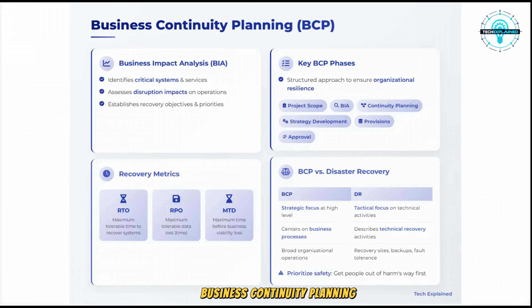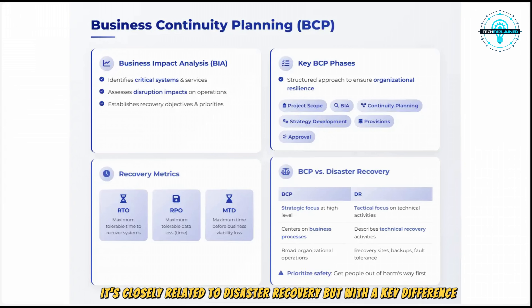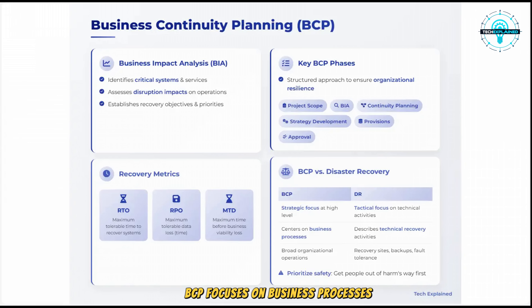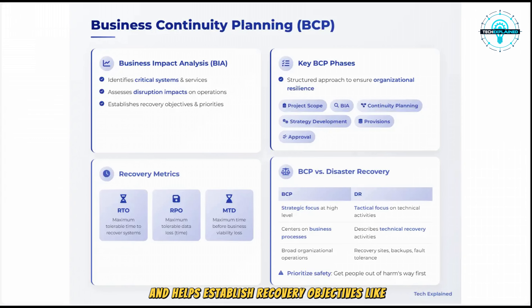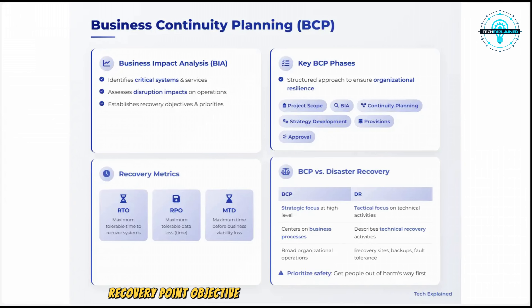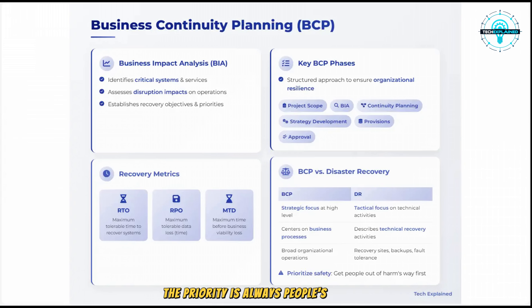Business Continuity Planning, or BCP, is about ensuring that critical business functions can continue during and after a disruption. It's closely related to disaster recovery, but with a key difference: BCP focuses on business processes while DR focuses on technical recovery. The Business Impact Analysis, or BIA, is a crucial part of BCP — it identifies critical systems and services, assesses the impact of disruptions, and helps establish recovery objectives like RTO (recovery time objective: how quickly you need to recover) and RPO (recovery point objective: how much data you can afford to lose). Remember, in any disaster the priority is always people safety first — get people out of harm's way, then worry about IT recovery.